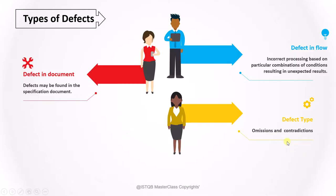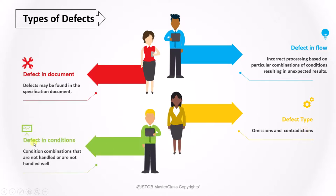The last one is defect in conditions. So condition combinations that are not handled or are not handled well can be found out by using a cause-effect graph. Because here we are checking the combinations itself. So if certain combinations are not handled, we can find it out. So these are the 4 types of defects: defect in the specification, defect in the flow, omissions and contradictions, and conditions.